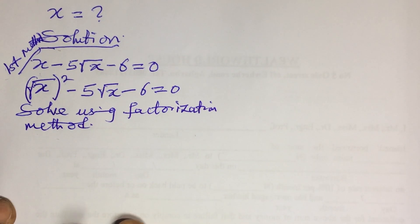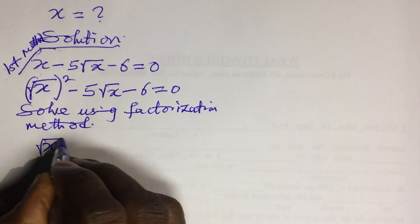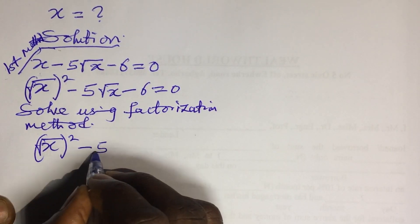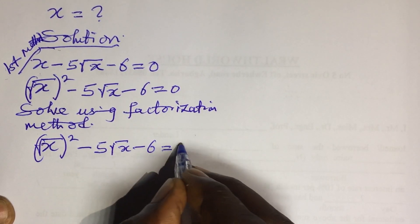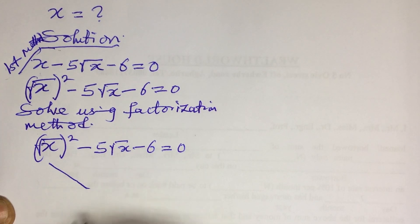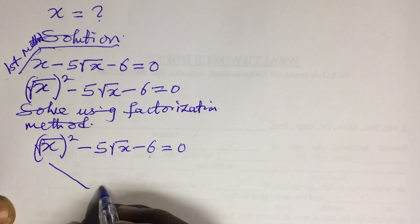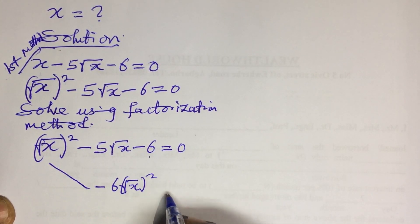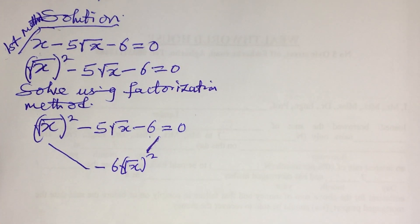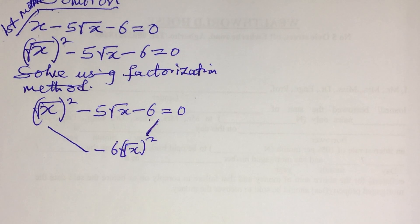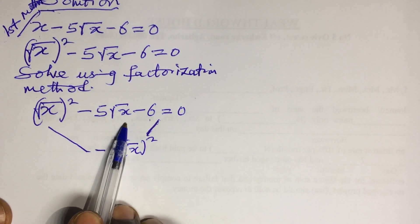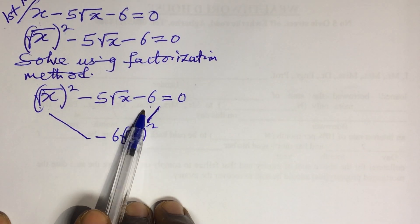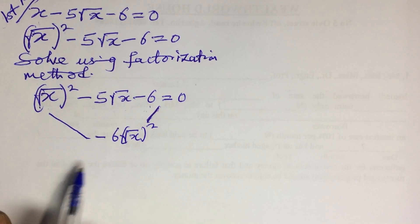Let's put down our question again: (√x)² minus 5√x minus 6 equals 0. We bring (√x)² and use it to multiply minus 6, giving minus 6(√x)². Now we look for two numbers that add together to give minus 5√x and multiply together to give minus 6.